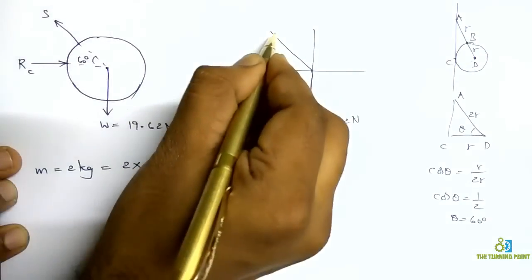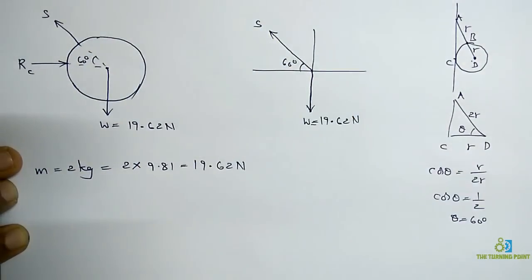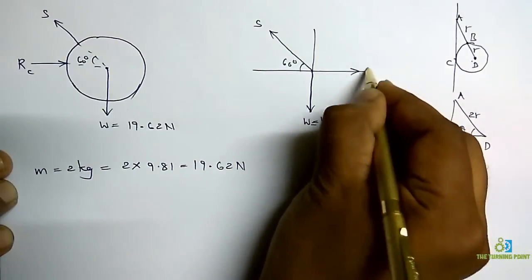So I will draw a line which is inclined at 60 degrees to horizontal. So S is inclined at 60 degrees to horizontal. Next, another force RC along horizontal direction. Right. So this is RC.